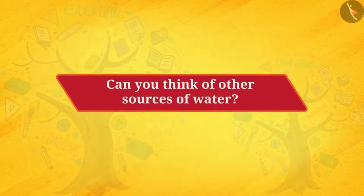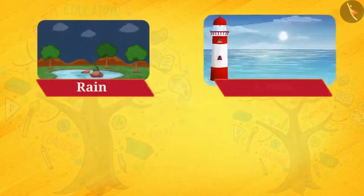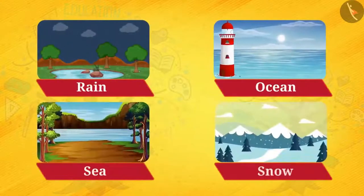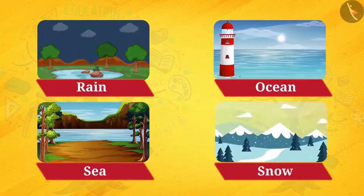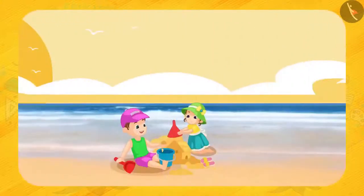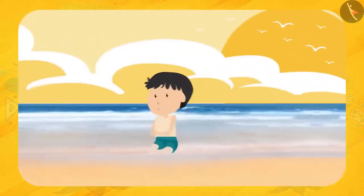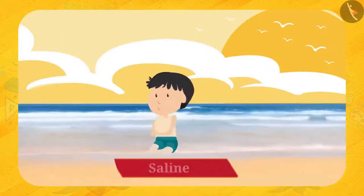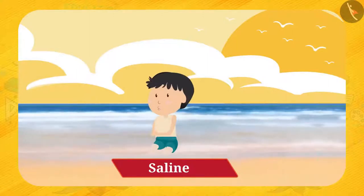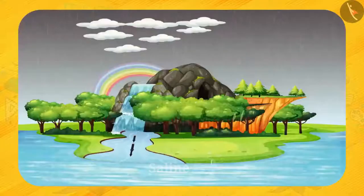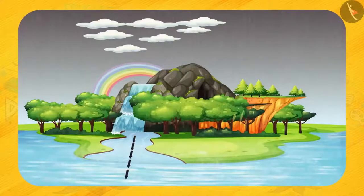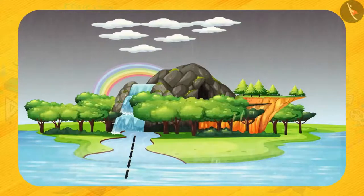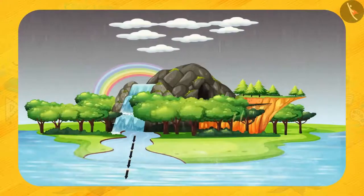Can you think of other sources of water? They are rain, ocean, sea, and mountains covered with snow. Friends, have you ever been to the beach? We all have been to the beach and even tasted the water. What does sea water taste like? Salty! But have you ever thought why? This is because the rain dissolves the salt from the rocks through runoff and mixes with the sea. That's why sea water is salty.